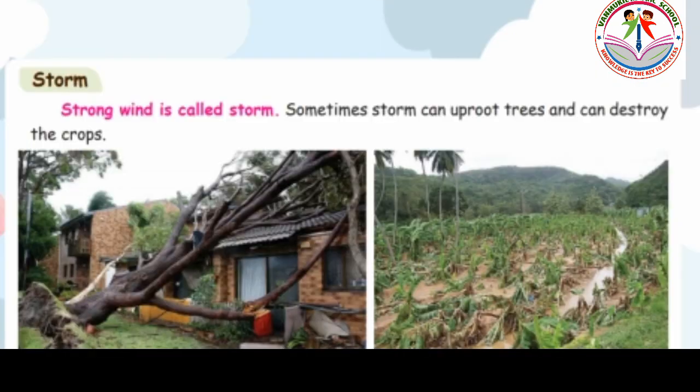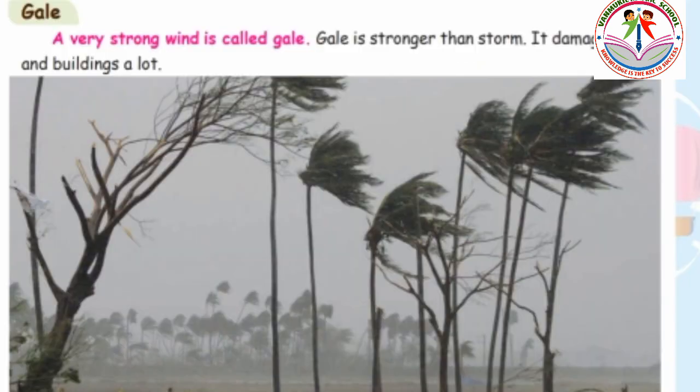Next, storm — the wind is strong and sometimes it can uproot trees and spoil crops. The last one is gale — it is a very very strong wind compared to storm because it damages many trees and many buildings. Thank you, kids!